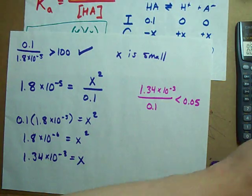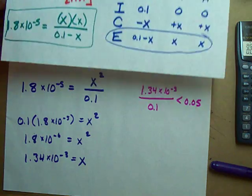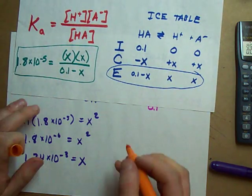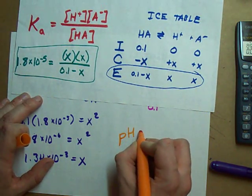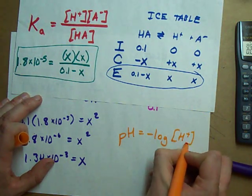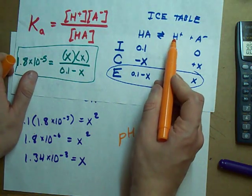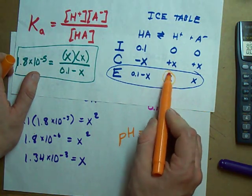We're not done yet, though, because we still have to calculate the pH. That was the original question. Take a look. To calculate the pH of something, you need the negative log, the concentration of H+. What's the concentration of H+? X.